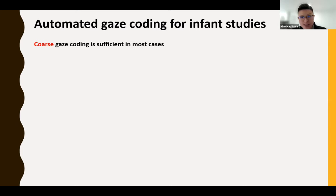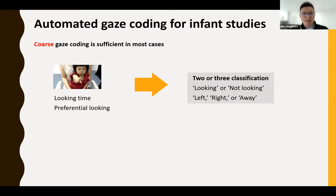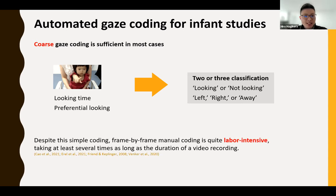When it comes to infant studies, developmental psychologists usually need only coarse gaze coding, such as looking left, right, or away from the monitor. They don't need fine-grained gaze coordinates; they usually need two or three classifications like looking or not looking. Despite this simple coding, frame-by-frame manual coding is quite labor intensive — it takes at least several times as long as the video duration. That's why developmental psychologists are now trying to use automated gaze coding algorithms to process webcam-based video data.